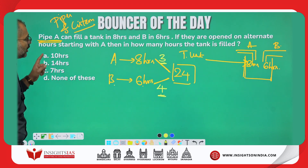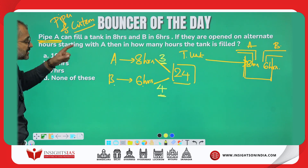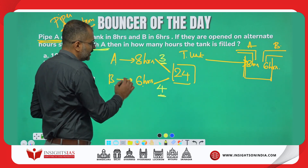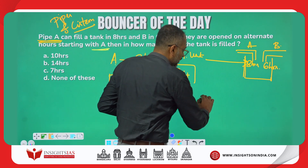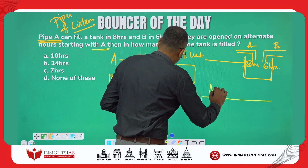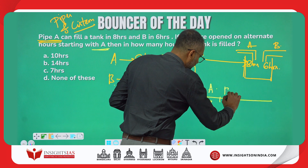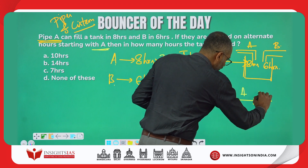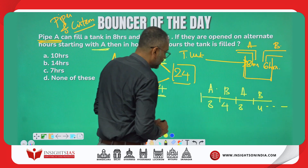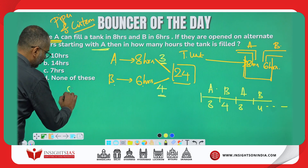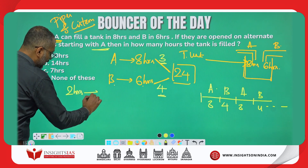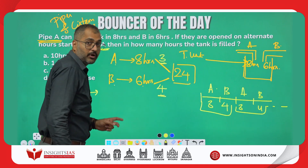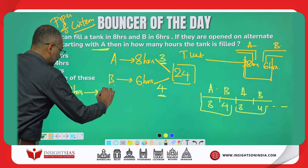Now they have to work on alternate hours, starting with A. That means the first hour A comes and fills 3 units, the second hour B comes and fills 4 units, then again A fills 3, then B fills 4. For every 2 hours, how many units are filled inside the tank? For every 2 hours, 7 units are filled.